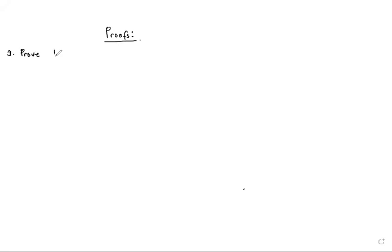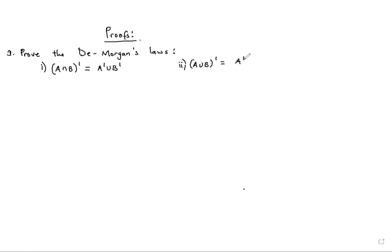We are proving De Morgan's laws. The first law states that (A∩B)' = A'∪B', and the second states that (A∪B)' = A'∩B'.